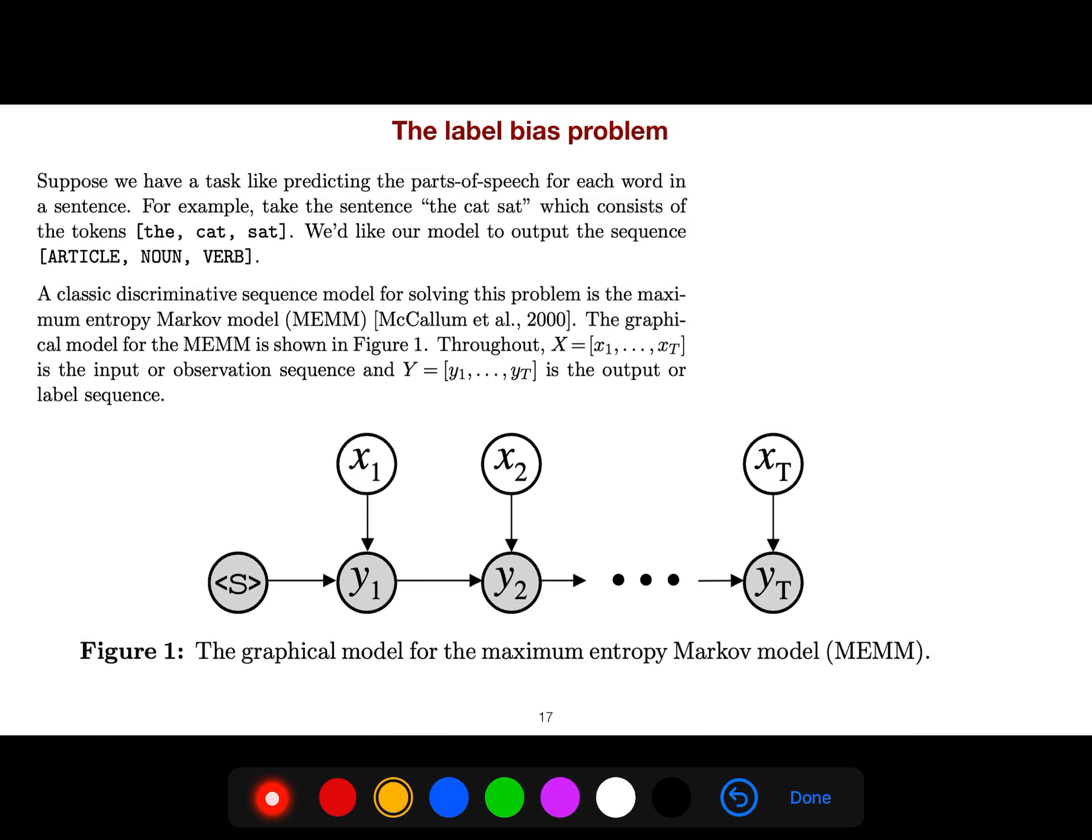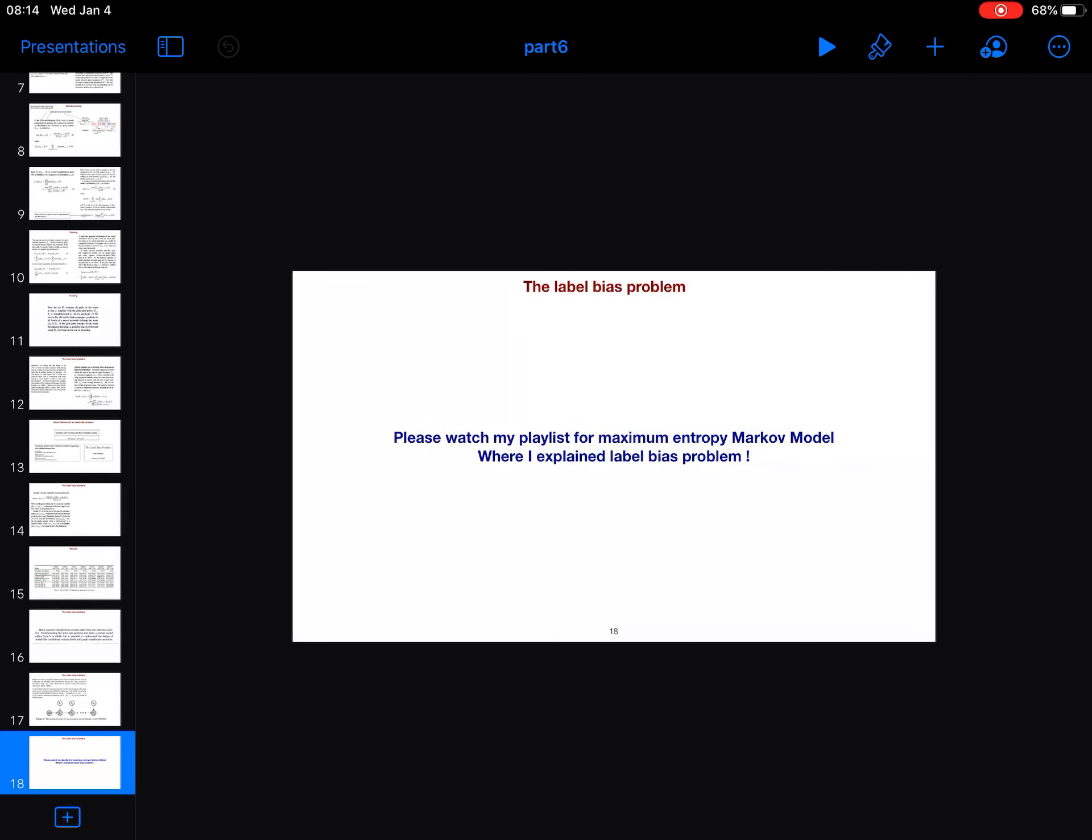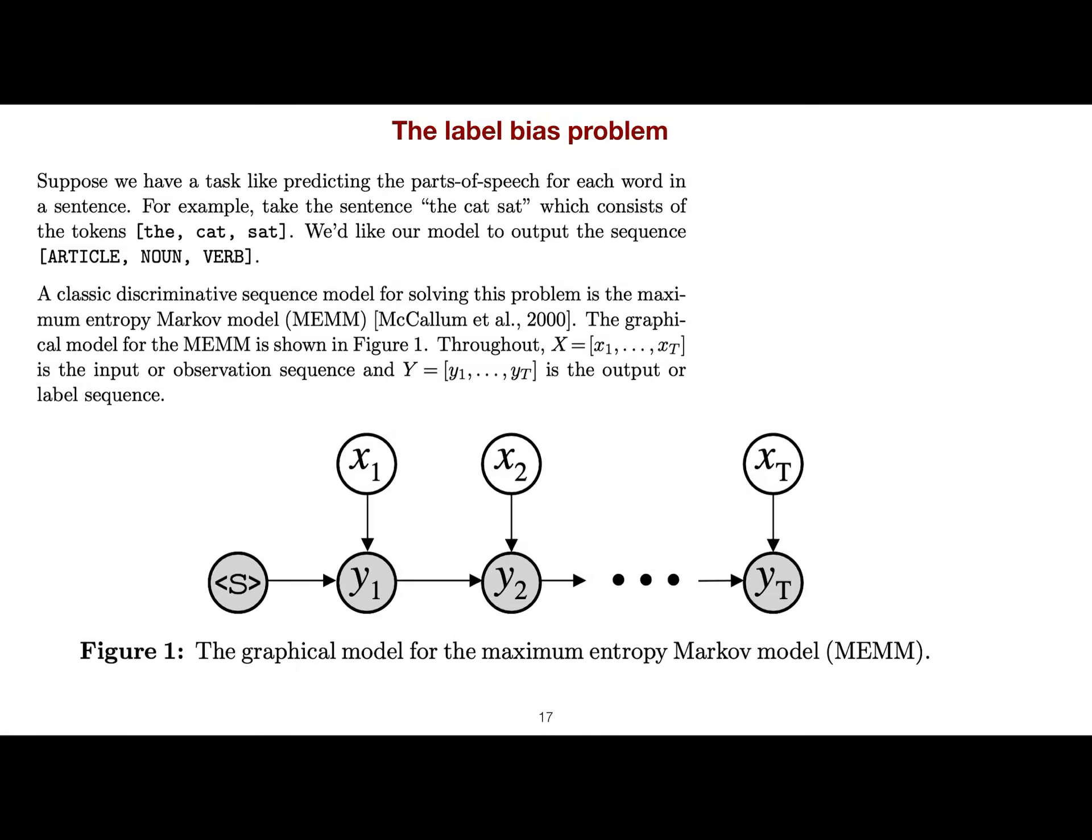This is a good simple example. Suppose we have a task like predicting the parts of speech for each word. For example, taking the sentence 'the cat sat' which consists of tokens the, cat, sat. We would like our model to output the sequence article, noun, verb.